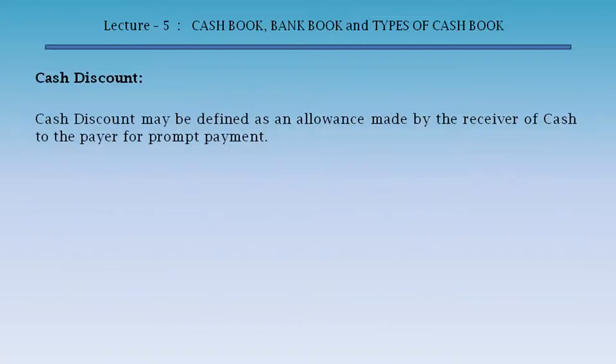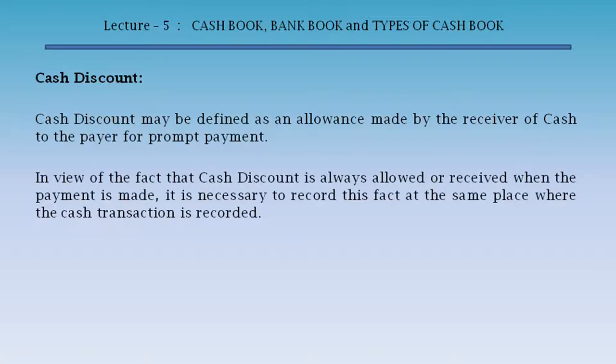Cash discount may be defined as an allowance made by the receiver of cash to the payer for prompt payment. In view of the fact that cash discount is always allowed or received when the payment is made, it is necessary to record this fact at the same place where the cash transaction is recorded.